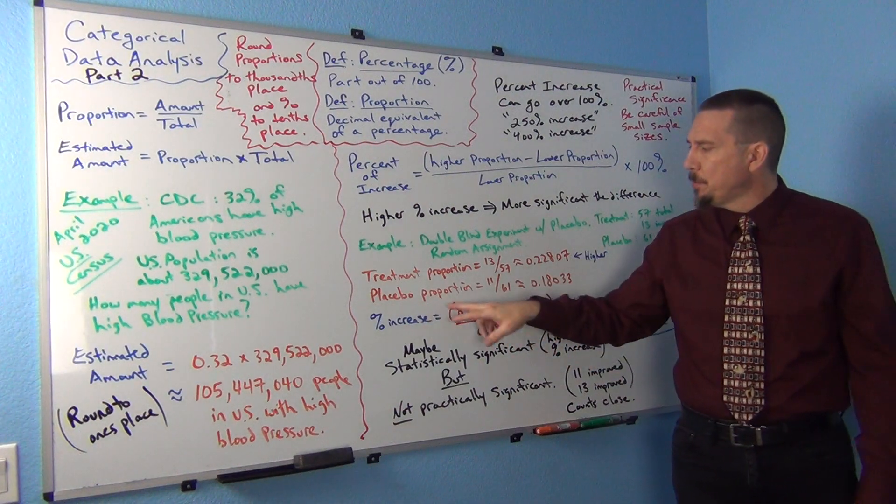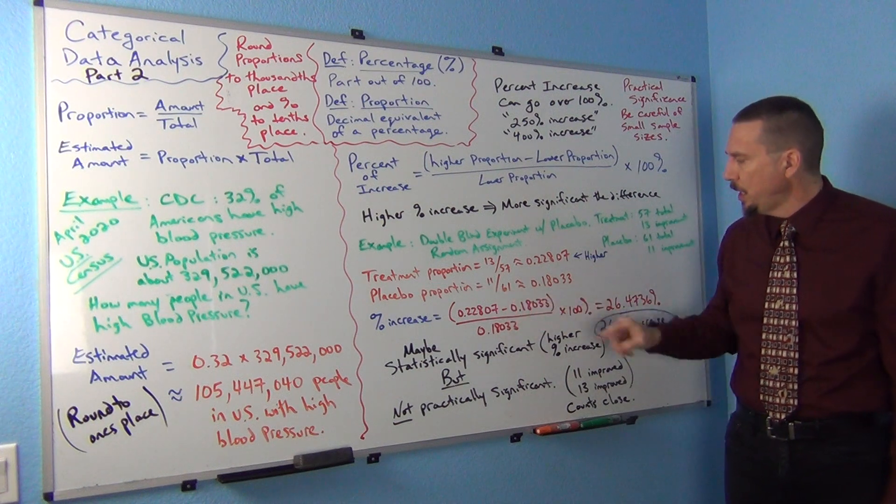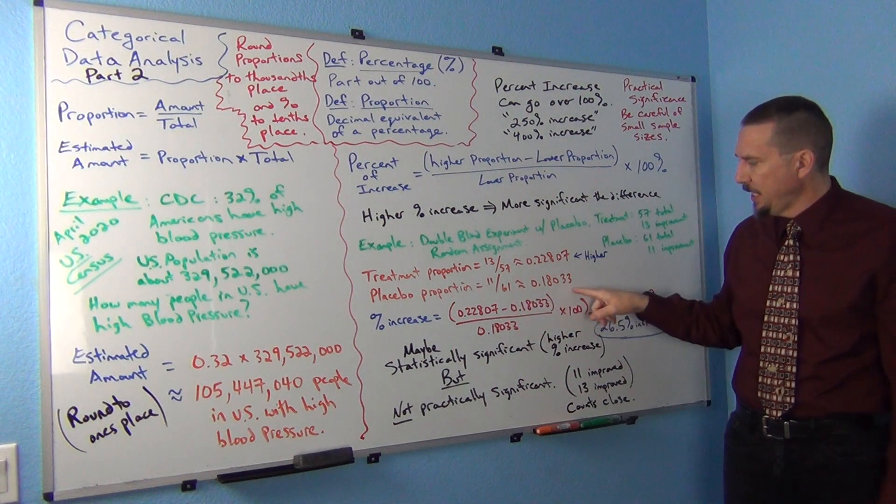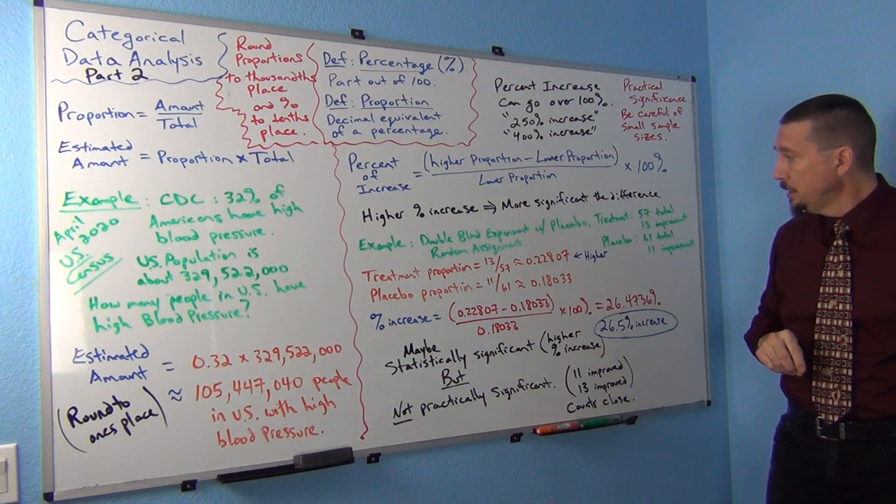For the placebo proportion, that would be 11 people showed improvement out of 61, which was .180. And again, I kept a couple more decimal places, .1803.